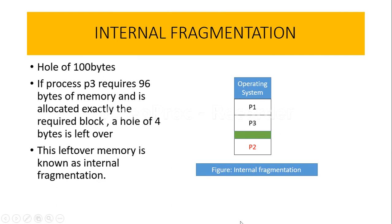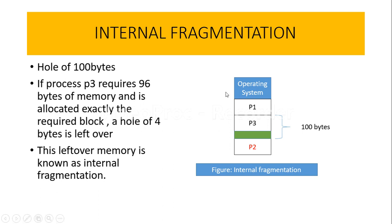Before explaining the example, let me tell you that the free memory space here is called a hole. I am taking three processes P1, P2, and P3. We assume that processes P1 and P2 requested memory space and they got the required memory space. When process P3 requires certain memory space, let us imagine there is a 100-byte memory space available and P3 requires 96 bytes of memory.